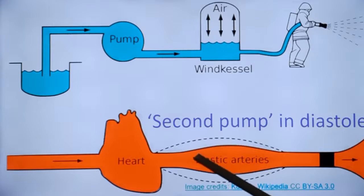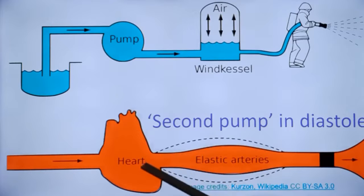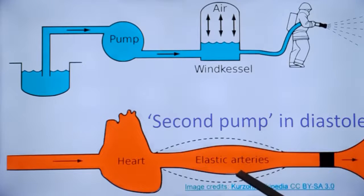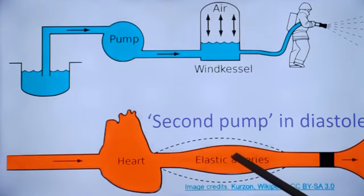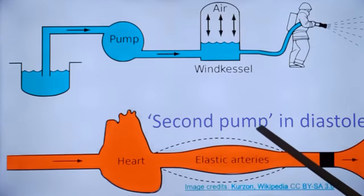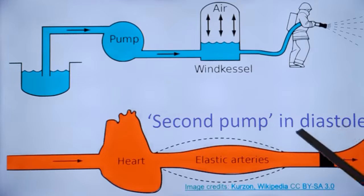A similar thing occurs in elastic arteries like the aorta. During systole, more blood enters the aorta than what leaves it, because the aorta expands. This additional blood received during systole is released during diastole, so that the aorta acts as a second pump in diastole.